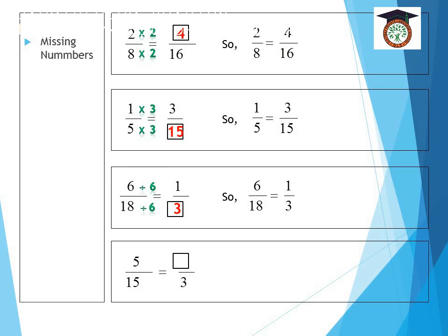Another example. The numbers from left to right are decreasing, so I'm going to divide. So ask yourself, 15 divided by what is equal to 3? Yes, the answer is 5. So 15 divided by 5 is equal to 3. So 5 divided by 5 is equal to 1. So 5 over 15 is equal to 1 third.